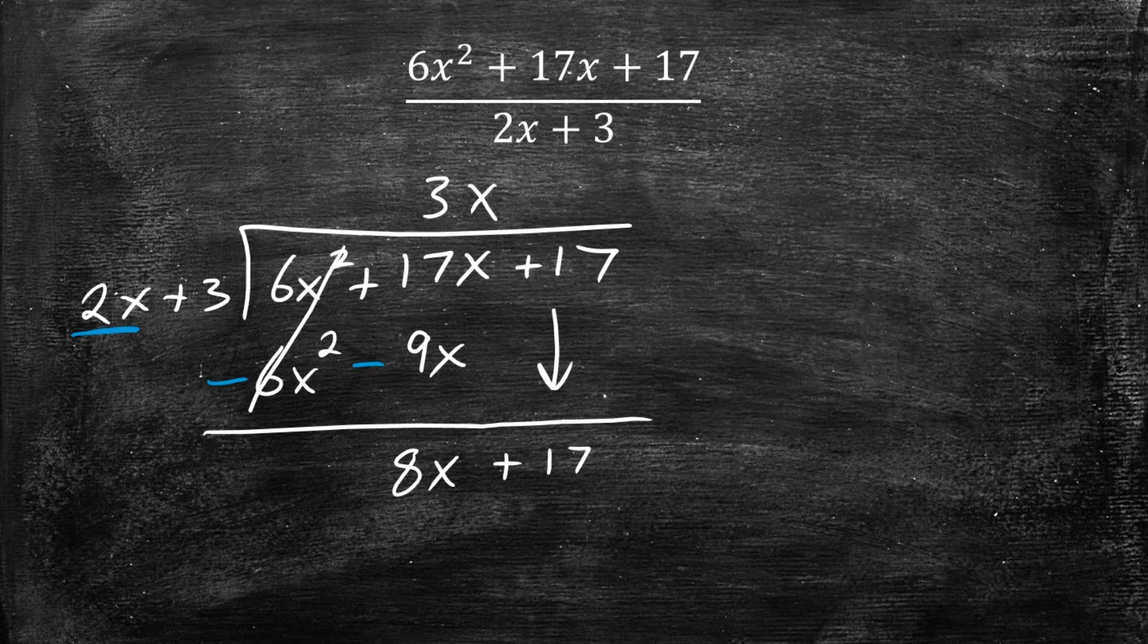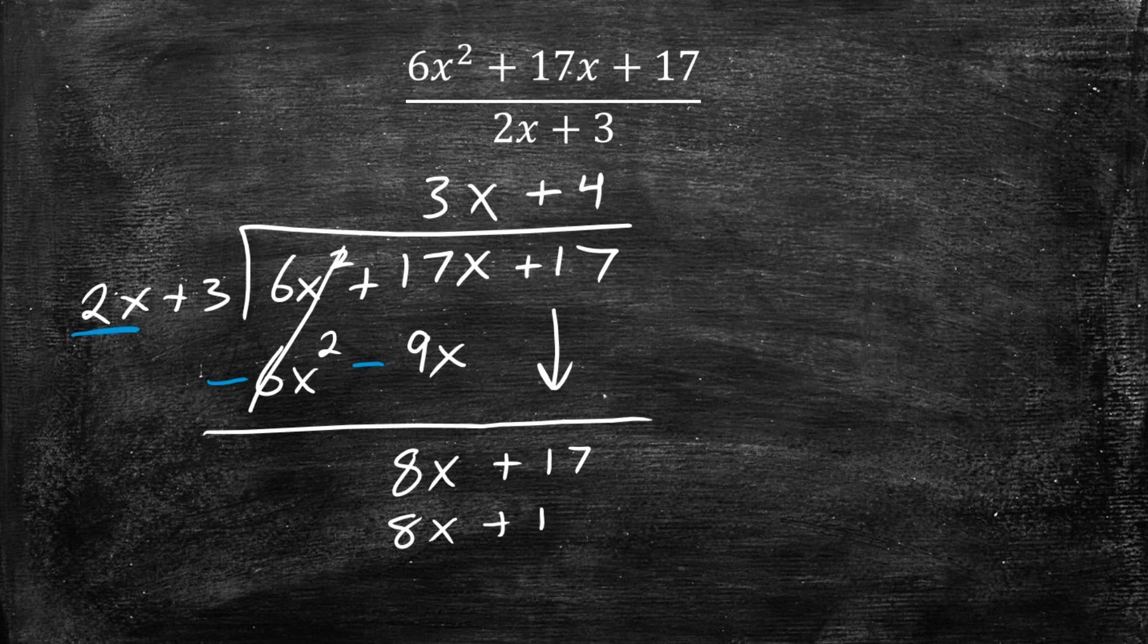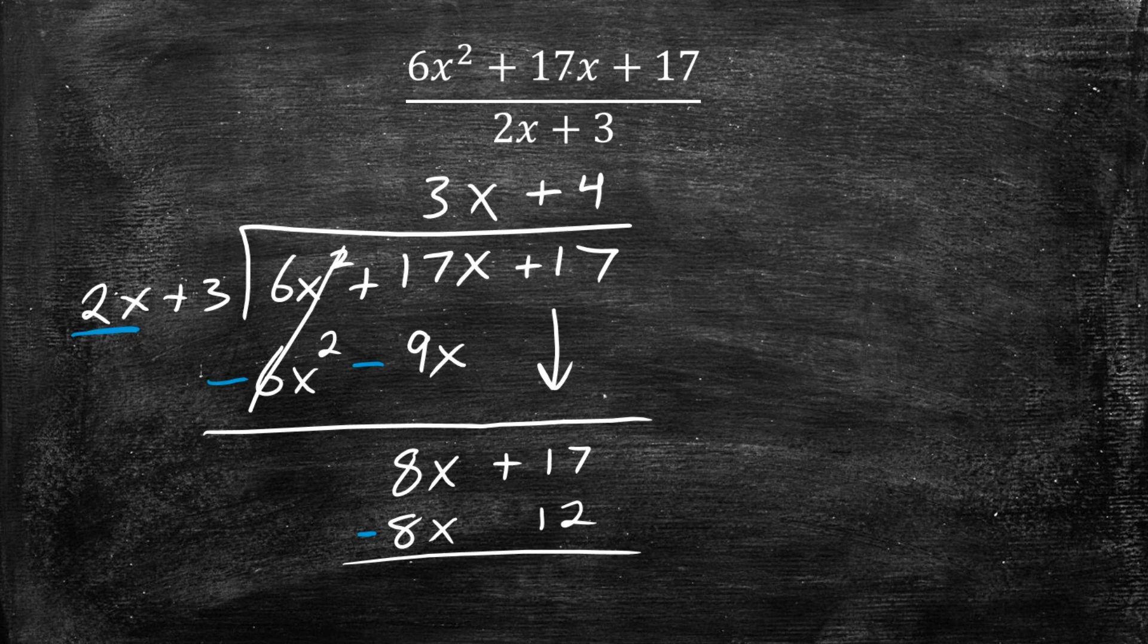And we repeat the process. 2x goes into 8x four times. 4 times 2x is 8x, 4 times 3 is positive 12. And now we want to subtract those. So we are going to change the signs. So that's going to be a negative 8x, and then that is going to be a negative 12. And when we do that, these 8x are going to cancel, and then you get 17 minus 12, which is 5.